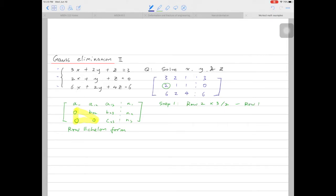The second row multiplied by 3 over 2 will have 3, 3 over 2, 3 over 2, and 0. The first row, let's just write it, that's 3, 2, 1, 3.